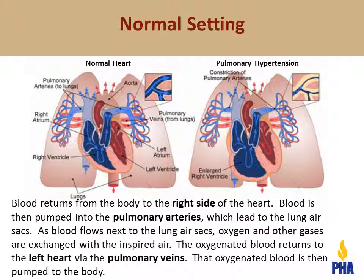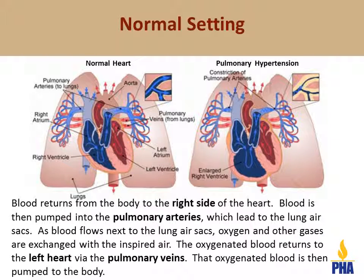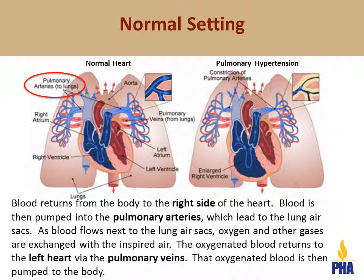The heart and lungs are intimately related. The heart can simplistically be thought of as having two sides, a right side and a left side. In healthy individuals, blood returns from the body to the right side of the heart. Blood is then pumped into the pulmonary arteries, which lead to the lung air sacs. As blood flows through the arteries next to the lung air sacs, oxygen and other gases are exchanged with the air we breathe. The blood with oxygen then returns to the left heart via the pulmonary veins and is then pumped to the body.